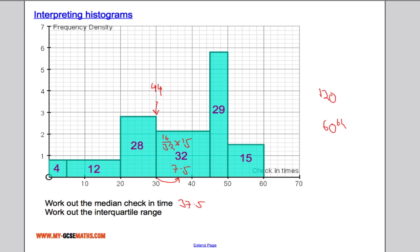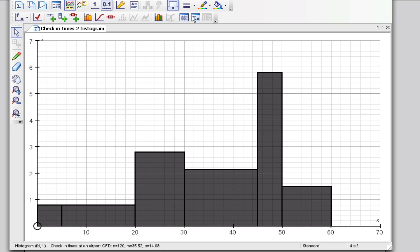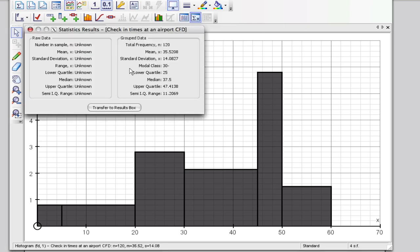Let's check that using Autograph again. So 37.5 is the median waiting time. If I bring up the statistics box, if we have a look here, the median waiting time here is 37.5, so absolutely spot on there.